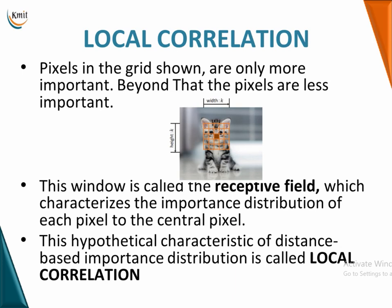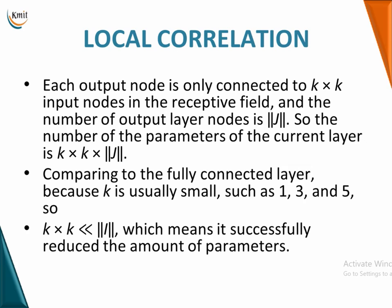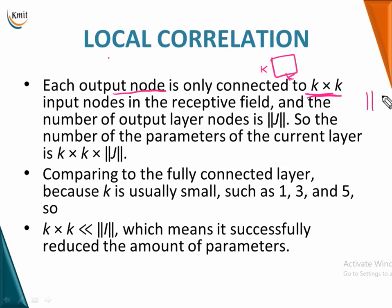Through local correlation, you get to know the receptive field. In technical terms, each output node is connected only to k×k input nodes — only to the receptive field of k×k rather than the entire image. If the number of output layer nodes is j, the total number of parameters is k×k×j. Comparing to a fully connected layer, k is usually kept very small, such as 1×1, 3×3, or 5×5.